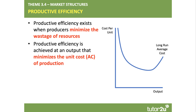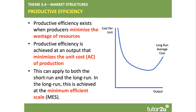Productive efficiency is achieved at an output where the unit cost or the average cost of production is minimised. It's where marginal and average cost intersect. And this concept of productive efficiency can apply to both the short run and the long run, depending on whether you're looking at short or long run cost curves.